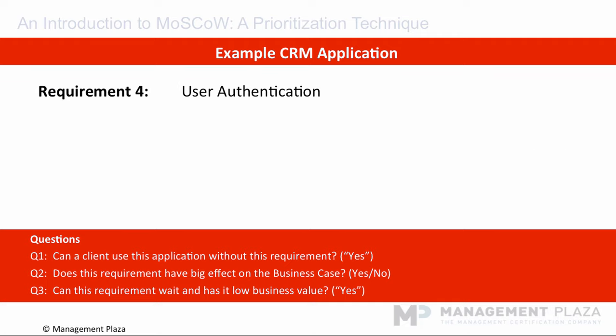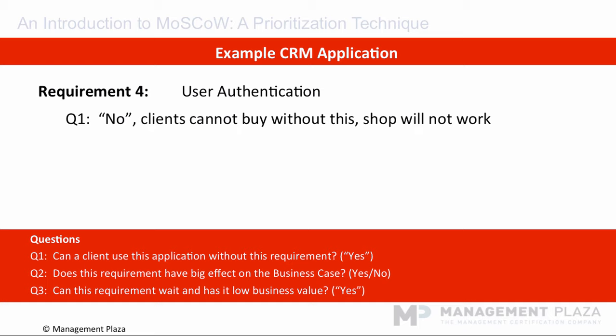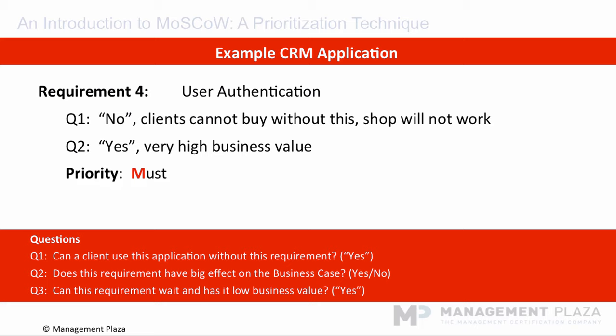The last requirement to prioritize is user authentication — giving a user ID to each of our customers. The first question: can a client use the application without this requirement? The answer is no — clients will not be able to buy without this requirement and the shop will not work, so it's needed. Question two: does this requirement have a big effect on the business case? Yes it does — it has very high business value as we cannot get any revenue without this. So we don't even have to consider question three, and we can prioritize this as a must have.